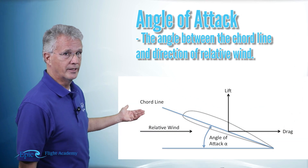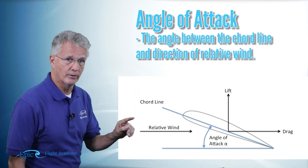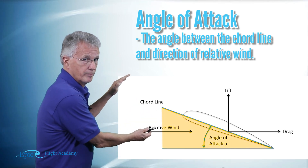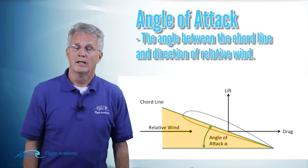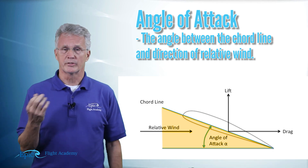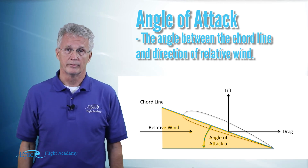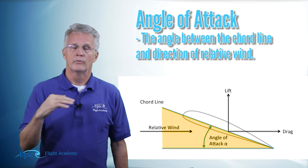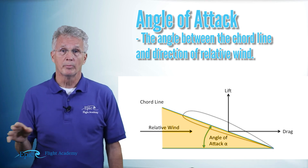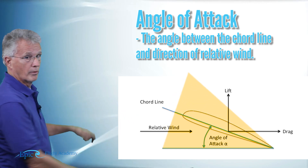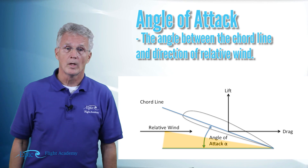With all of that in place, we can introduce a very important concept for pilots: angle of attack. The angle of attack is the angle between the chord line and the relative wind. The chord line runs from the leading edge to the trailing edge, so if those are stationary, the chord line doesn't move. The relative wind, however, may change relative to the motion of the airplane, so the angle of attack can get larger or smaller.